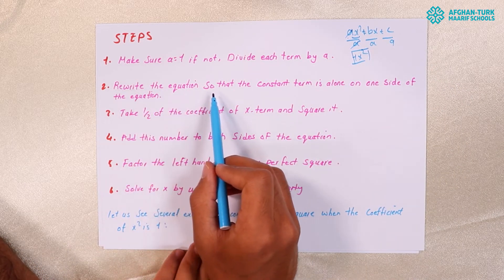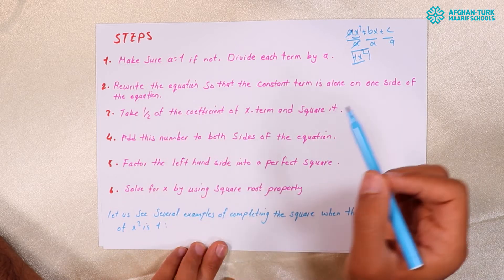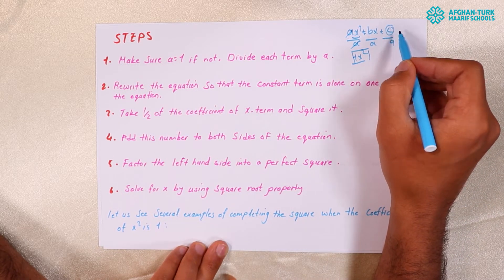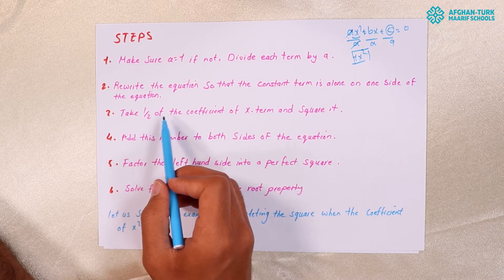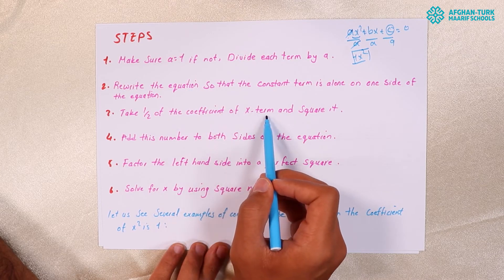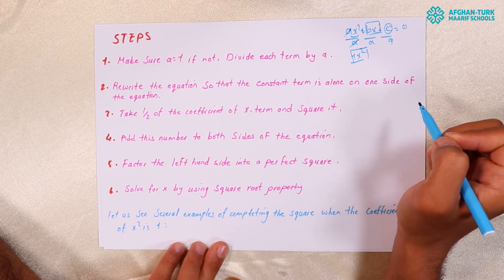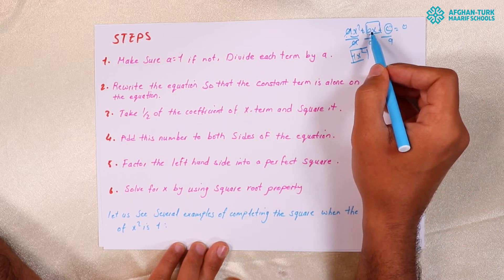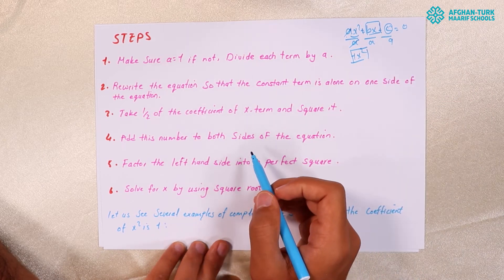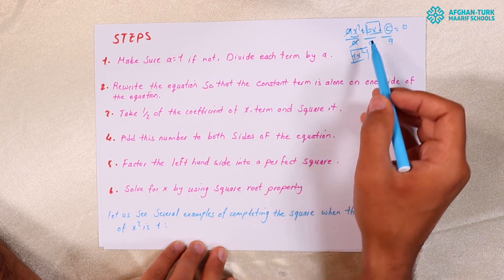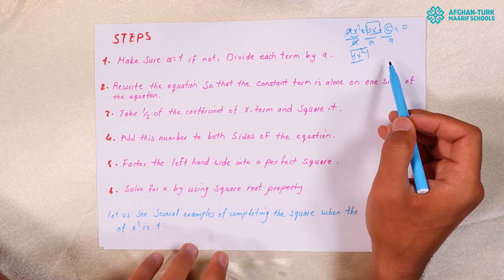Second, rewrite the equation so that the constant term is alone on one side of the equation — move the constant term to the other side. Third, take one-half of the coefficient of the X term — what is the X term? It means BX — and divide this term by 2.